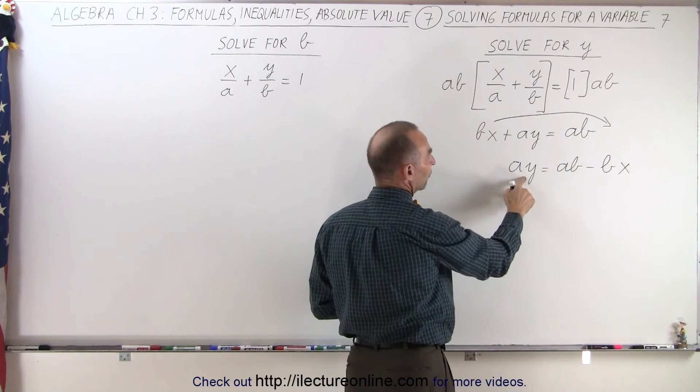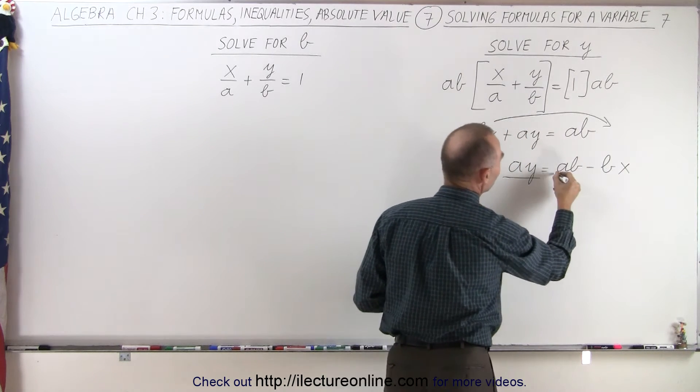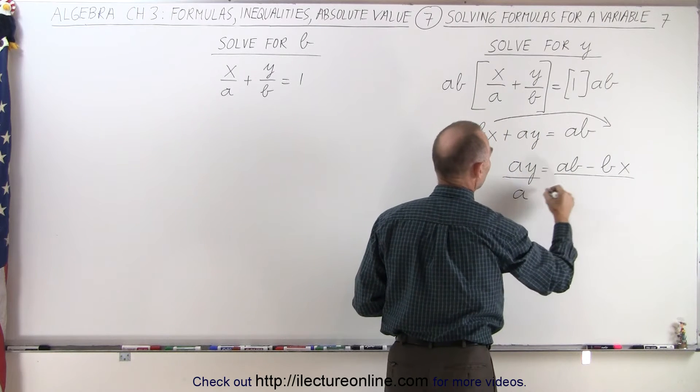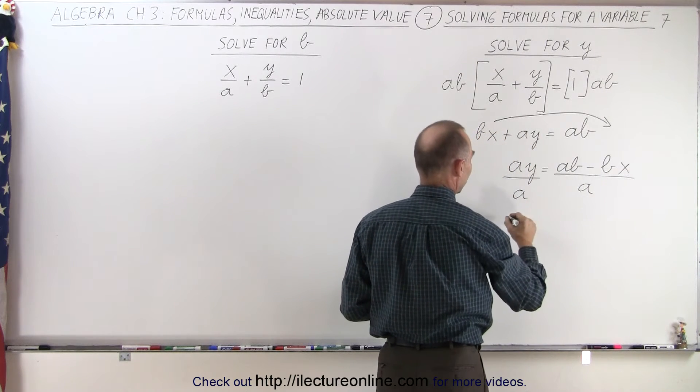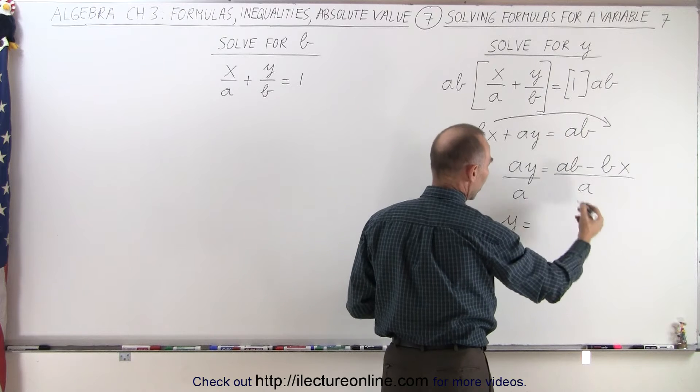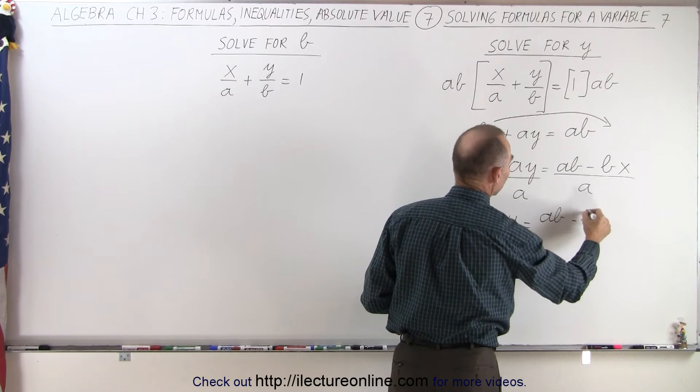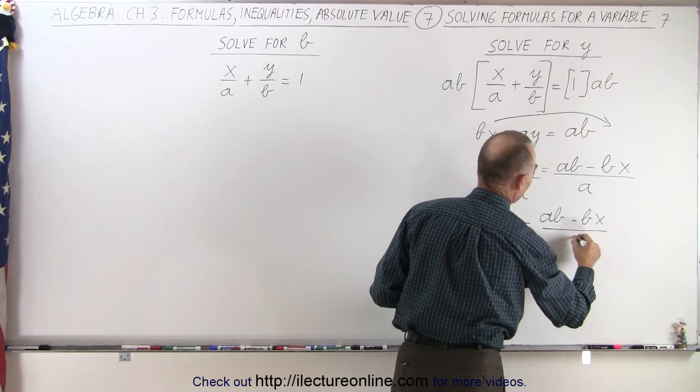And the last step, since we're solving for y, we want to divide both sides of the equation by the factor of y, which is a, and so on the left side, we end up with y equals, on the right side, ab minus bx divided by a.